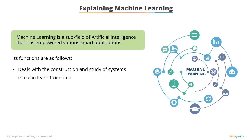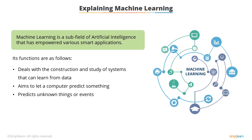Another example is fraud detection, where machine learning can learn from data and provide an answer to a question such as: is this credit card transaction fraudulent? Therefore, the objective of machine learning is to let a computer predict something. An obvious scenario is to predict an event in the future. Apart from this, it can also predict unknown things or events — something that has not been programmed or inputted into it. In other words, computers act without being explicitly programmed.